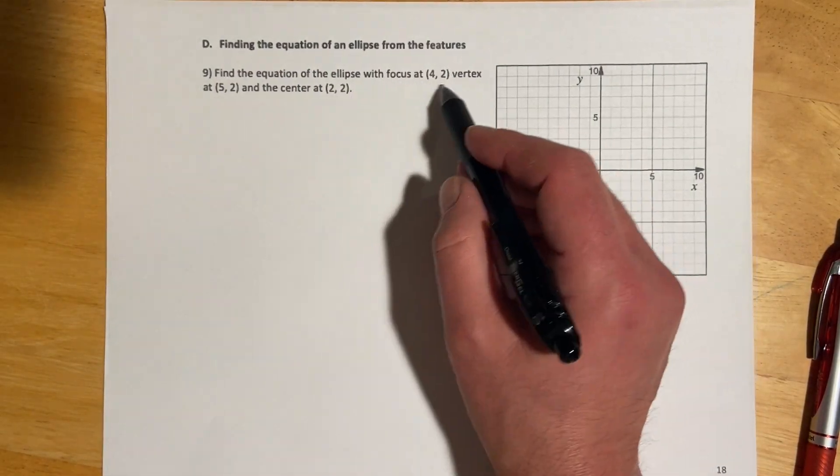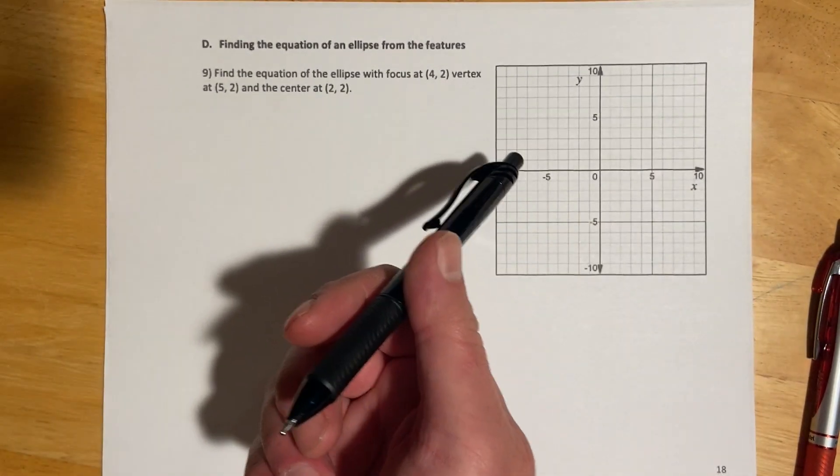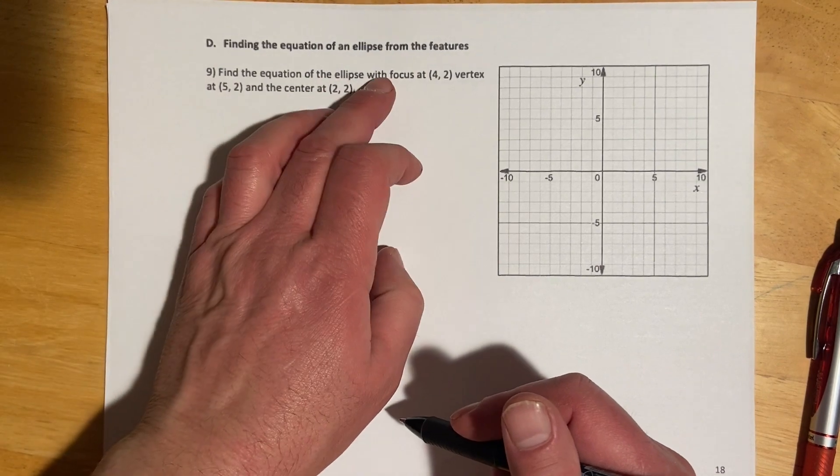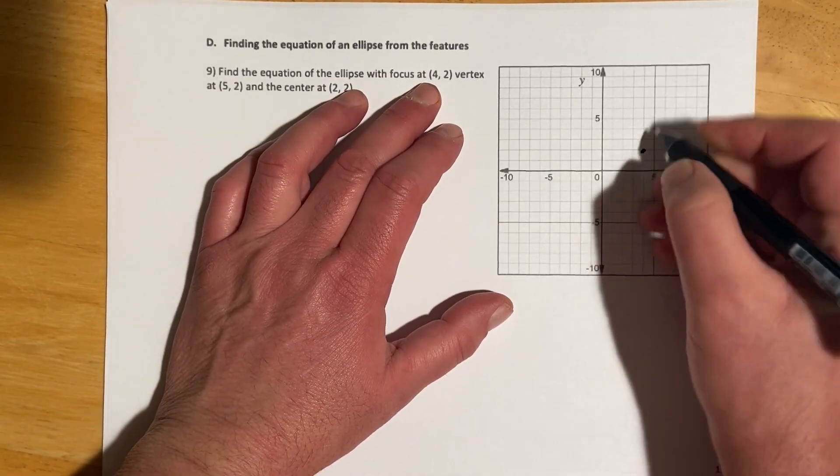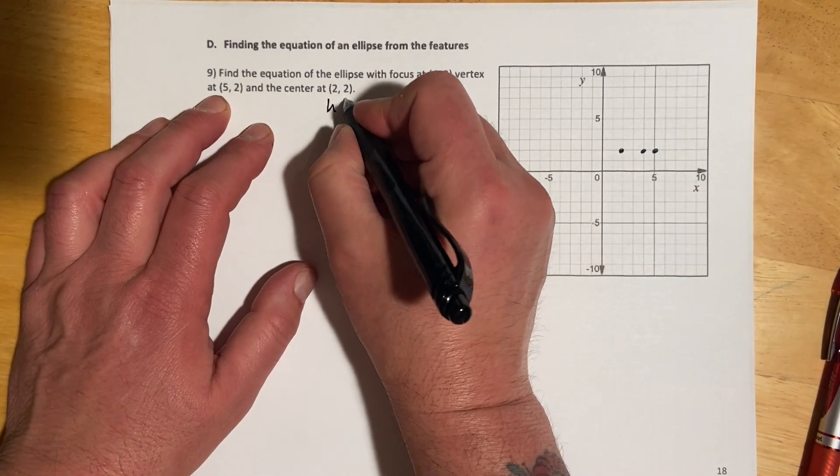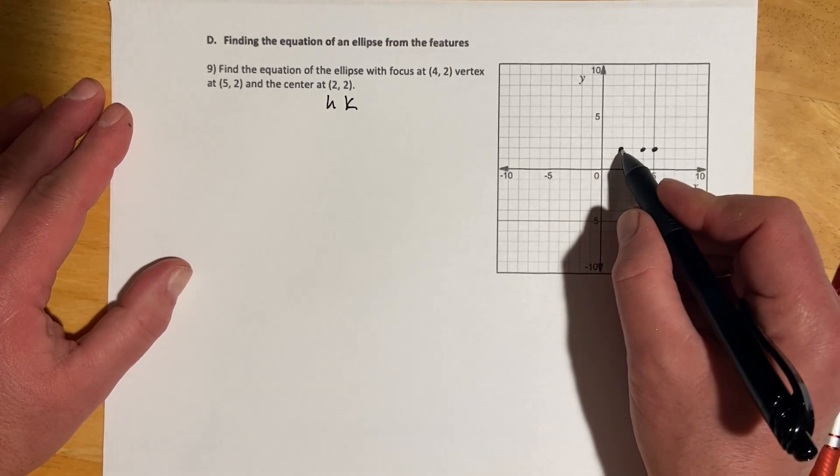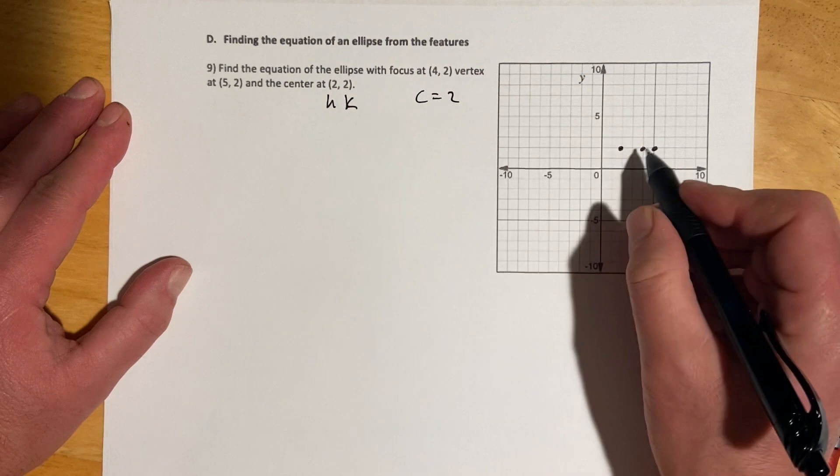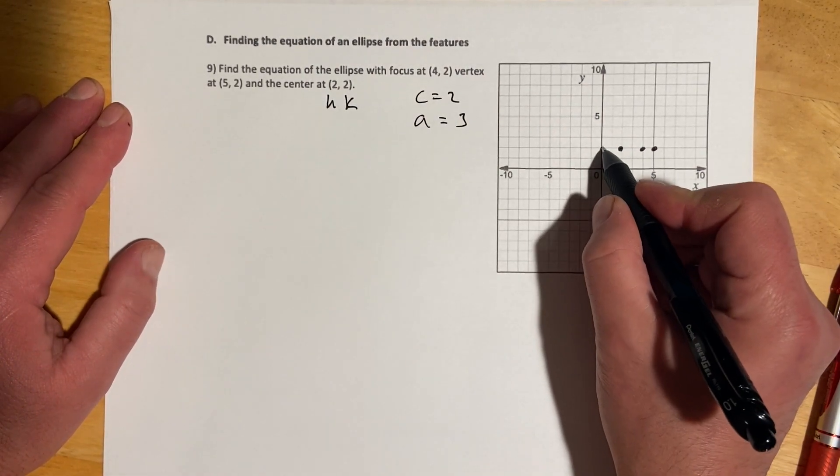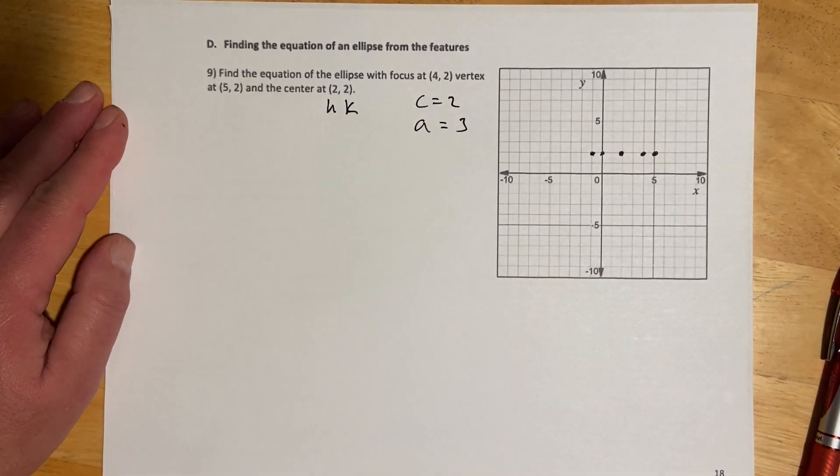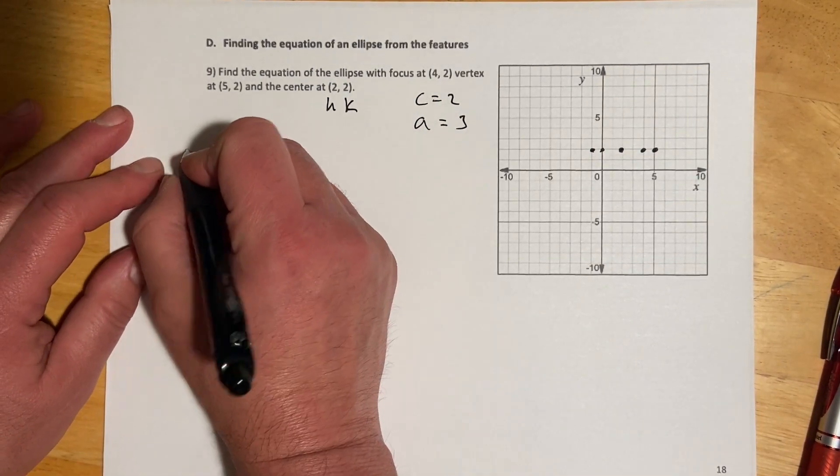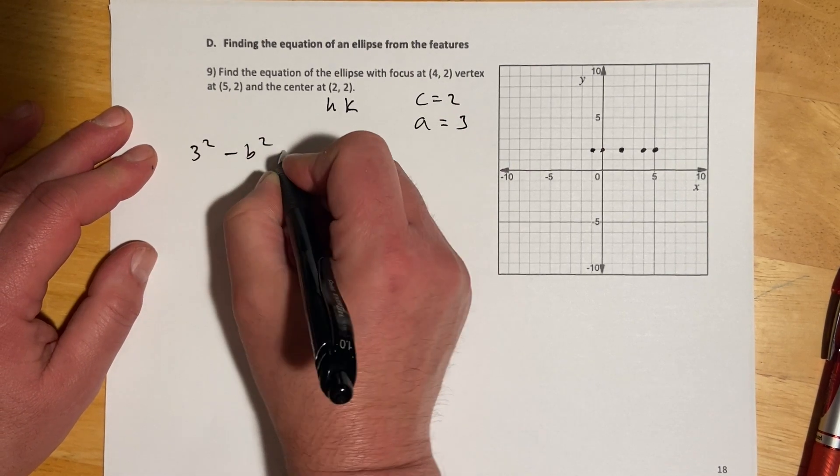For this next one, this time we're given some of the features and we're asked to find the equation. I'm doing this with the graph. There may not be graphs on the homework. It's optional. But for me, it helps me keep, again, everything orientated. So, find the equation of ellipse with a focus at x is 4, y is 2. A vertex at 5, 2. So, that's right there. And a center at 2, 2. So, there's our h,k. And so, looking at this, I'm going to have, so this is center to focus. So, that means c is 2. This one is center to vertex. So, that means a is 3. The other thing it does is it gives me, by symmetry, I know the other side. And given two of these, I can find the third measurement, which would be b. And that gives me my minor axis.